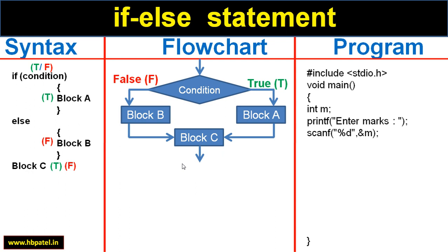Now let us take a small program to see how the if-else statement works. In this program we are reading marks from the keyboard — continuing the program from our last if statement video. We have one variable m which will hold the value of marks. First we ask the user to enter the marks, and the marks entered from the keyboard will be held by variable m. Then we check if m is greater than or equal to 35, which can result in true or false.